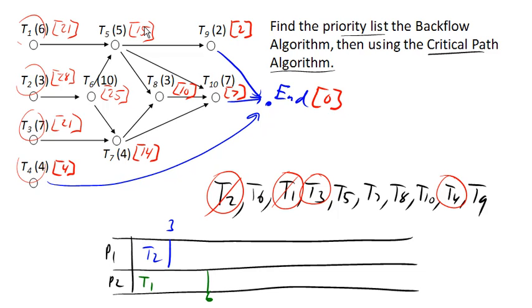And so when we fast forward to time 3, task 2 gets completed. Task 1 is being worked on. Then immediately task 6 becomes ready. And notice that this is great because task 6